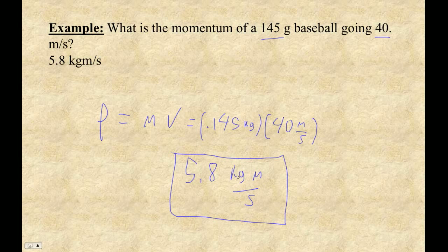5.8 kilogram meters per second. Ta-da! Those are the units of momentum. There's no shorter wavelength. There's nothing like a joule or a watt or anything. It's just kilogram meters per second. Let me show you something else that's cool about momentum.